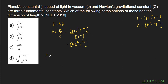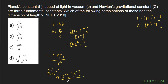The next is the universal gravitational constant G. We use the fundamental formula F = Gm₁m₂/r², where m₁ and m₂ are two masses and r is the distance between them. So G = Fr²/m₁m₂. Force F has dimensional formula MLT⁻², r² is L², and m₁m₂ is M². Simplifying, one mass cancels out, giving G the dimensional formula M⁻¹L³T⁻².